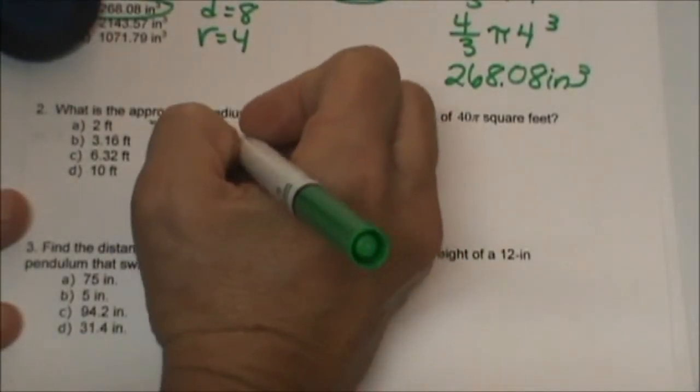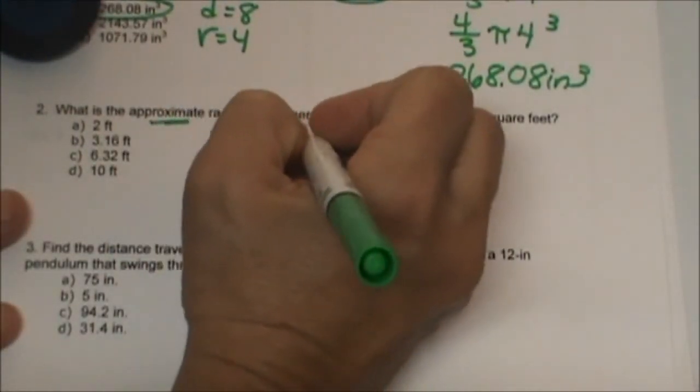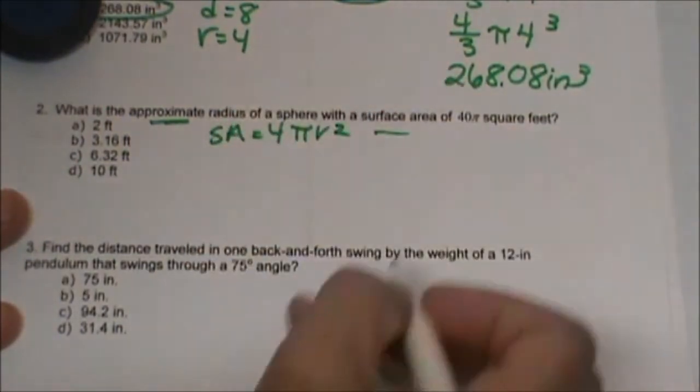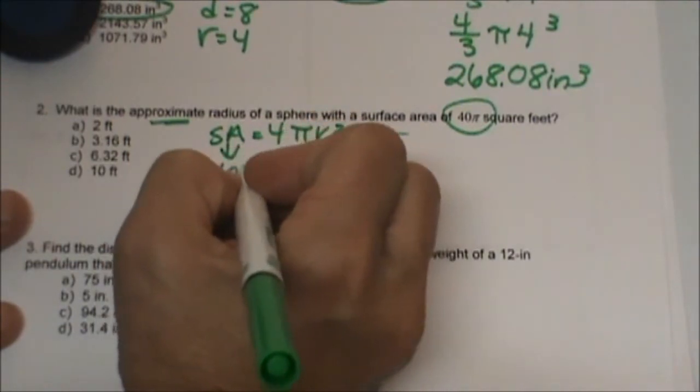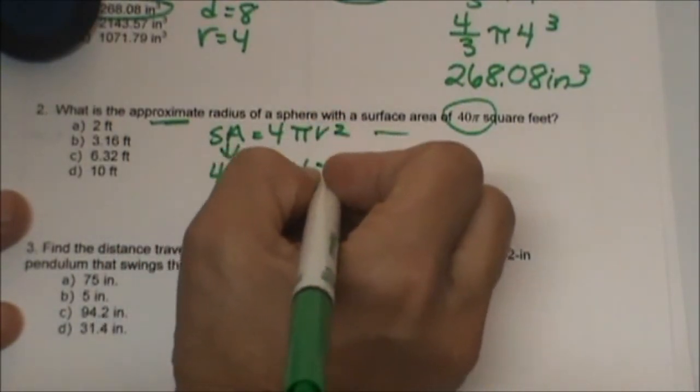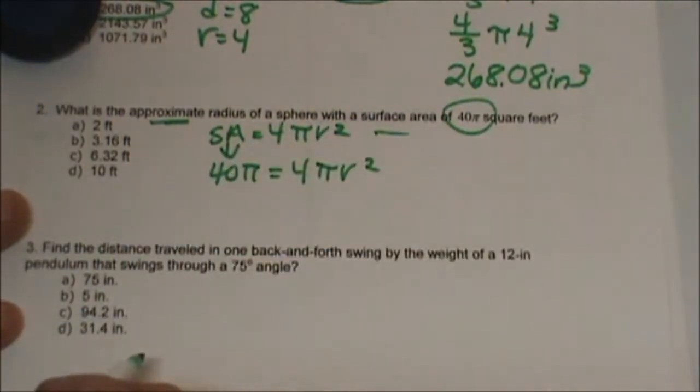Surface area formula is 4π r². We know the surface area is 40, so for surface area I'm going to plug in 40π. Let's plug that in and let's start solving.